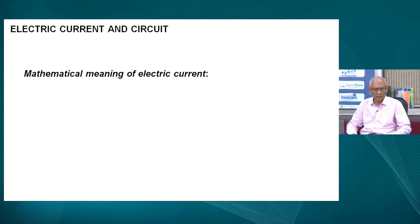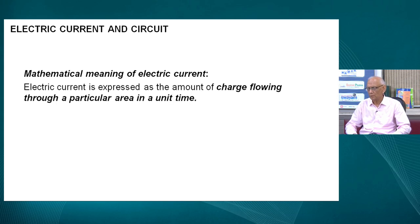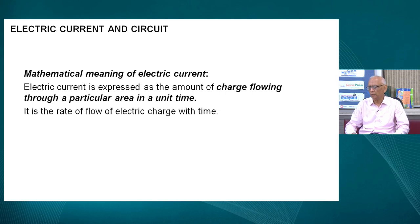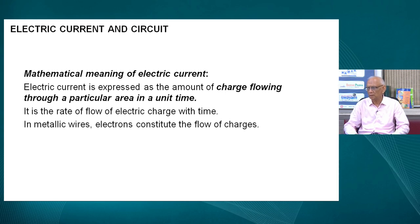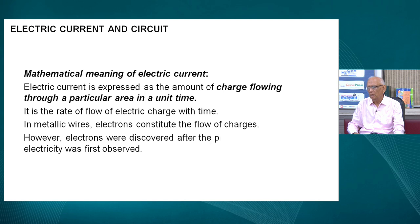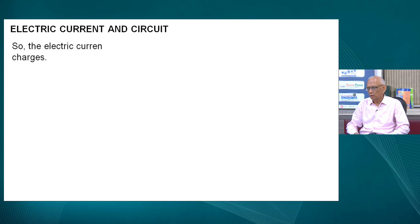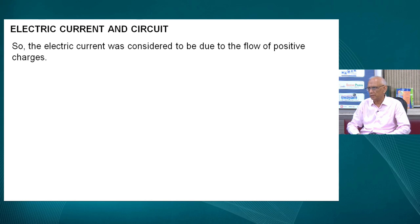Let's give a mathematical meaning to the term electric current. The electric current is expressed as the amount of charge flowing through a particular area in a unit time — simply put, it is the rate of flow of charge with time. In metallic wires, the electrons constitute the flow of charges. Interestingly, when electricity was discovered and put to use, electrons had not been discovered. So the electric current was considered to be due to the flow of positive charges alone.